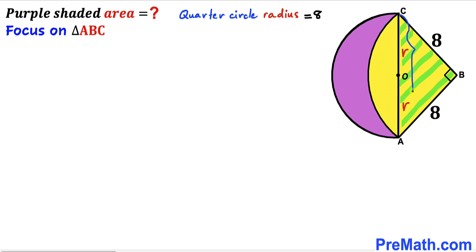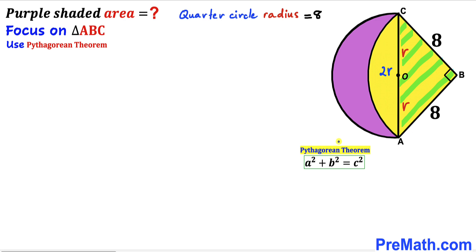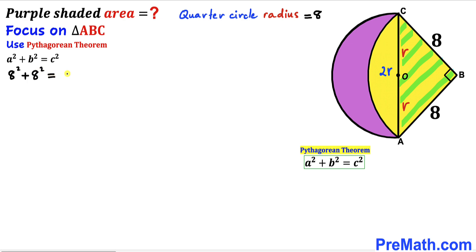The hypotenuse AC is going to be r plus r, which equals 2r. We'll apply the Pythagorean theorem: A² + B² = C². In our case the two legs are 8 and 8, and our hypotenuse is 2r. Filling in the formula: 8² + 8² = (2r)².